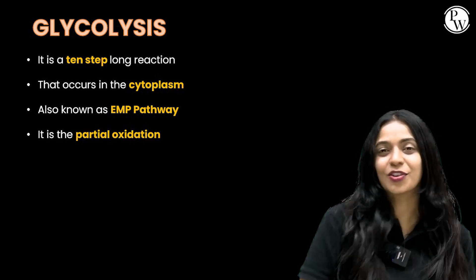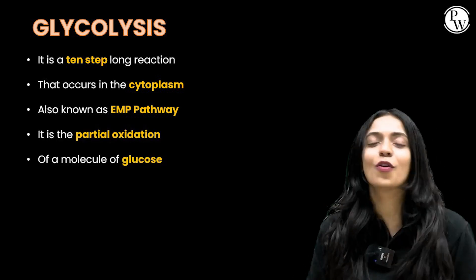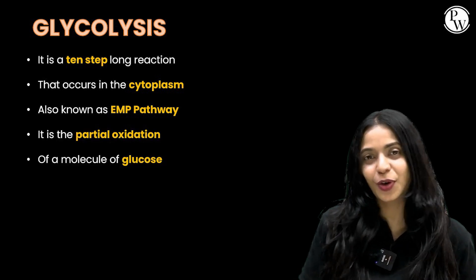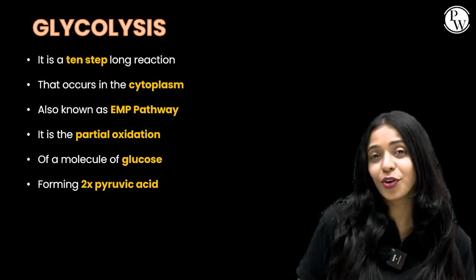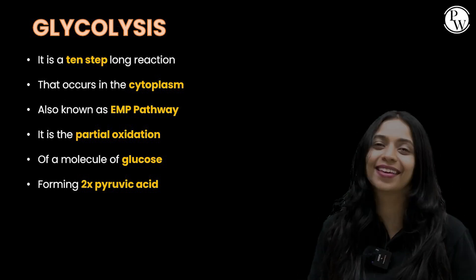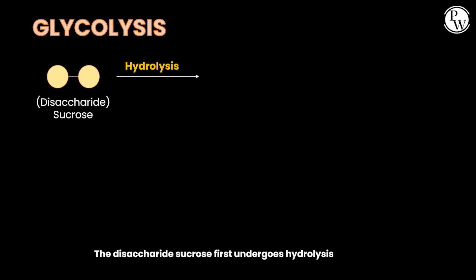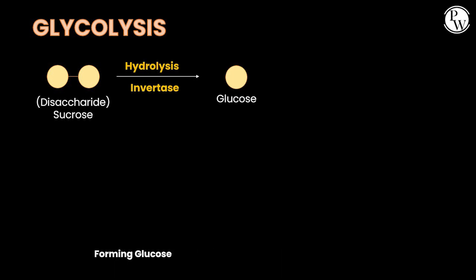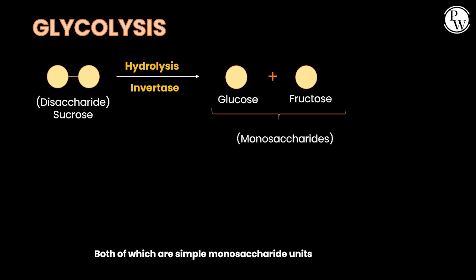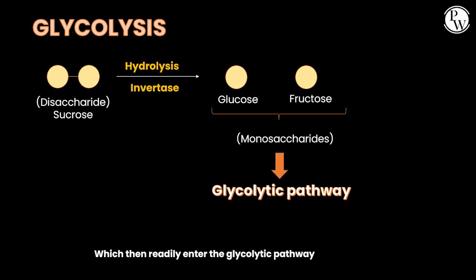Glycolysis is the partial oxidation of a molecule of glucose, forming 2-pyruvic acid. The disaccharide sucrose first undergoes hydrolysis using the enzyme invertase, forming glucose and fructose — both simple monosaccharide units — which then readily enter the glycolytic pathway.